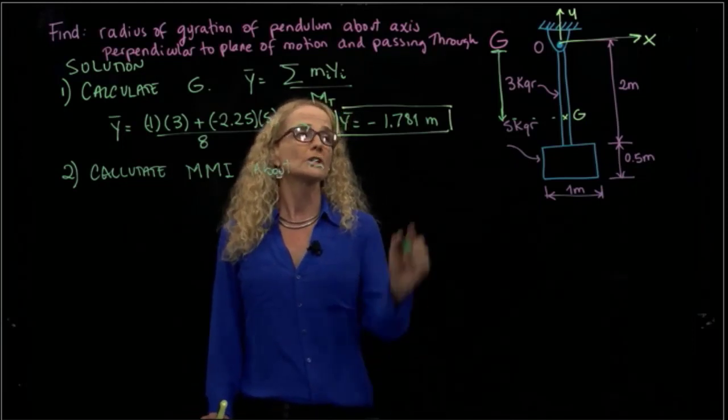The second thing that we are going to do is calculate our mass moment of inertia about G. So to be able to calculate the mass moment of inertia about that specific point that we already calculated, we will use the parallel axis theorem.